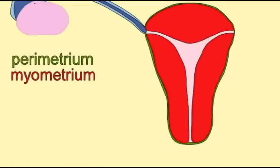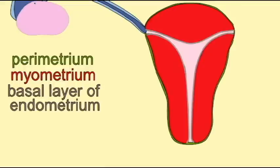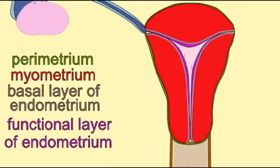The wall of the uterus has a number of layers. The outer perimetrium, a smooth serous membrane.